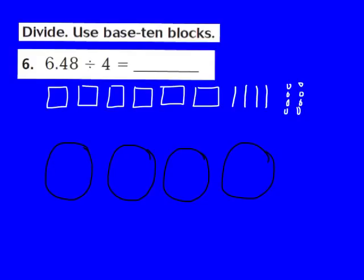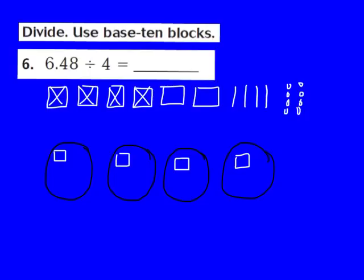Our next step is to share those ones. I'm going to place 1 flat in each circle: 1 here, 1 here, 1 here, and 1 here. That takes care of 4 of the wholes. But I still have 2 of those wholes left, and I can't evenly divide 2 wholes among 4 different groups. So I'm going to have to regroup.